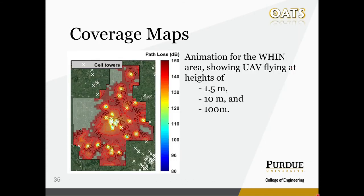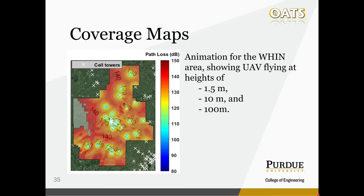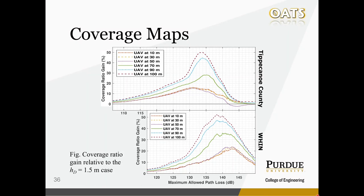For the coverage map, we have path loss values obtained from the NTIA IHATA model, which indicate how much the signal would degenerate in the channel — so the lower the value, the better. It is quite challenging to interpret these maps because we would like the results to be independent of the equipment. To achieve that, we decided to look at the maximum allowed path loss values and plot accordingly the coverage ratio gain curves. For example, if we allow at most a path loss of 135 dB, then we can expect a coverage ratio of around 50% at a UAV height of 100 meters for a typical county and around 45% for the WHIN area. If you have the maximum transmitter power and the minimum detectable receiver power for your system, you can calculate the maximum allowed path loss and read out the coverage ratio gains from these curves.